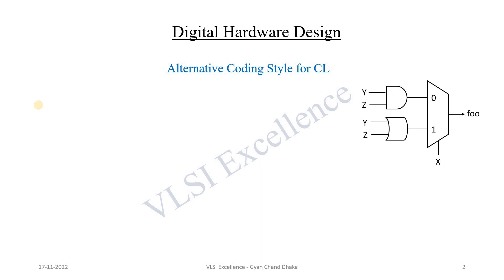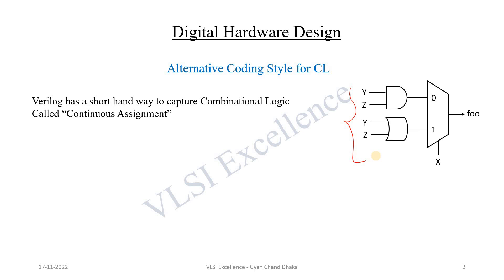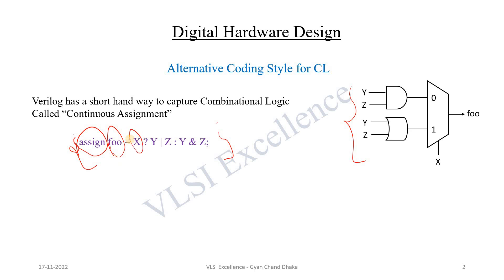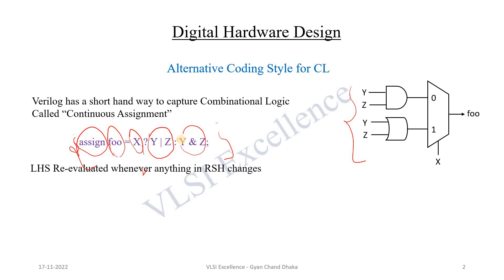There is one alternative coding style to specify combinational logic in Verilog. Taking the same example, in Verilog there is a short and easy way to capture combinational logic called continuous assignment. Using continuous assignment we can specify the behavior of a digital circuit. Continuous assignment always starts with the assign keyword. Based on the selection line of the multiplexer: if the selection line is 1, foo gets the value y OR z; else if x is 0, foo gets the value y AND z.